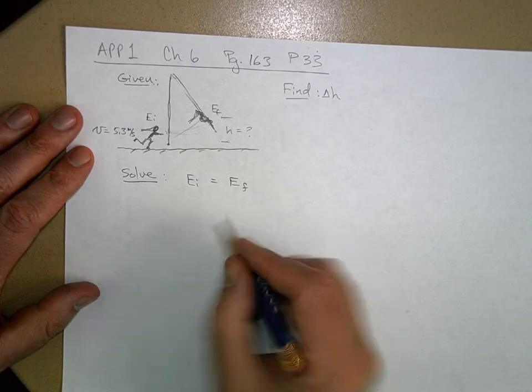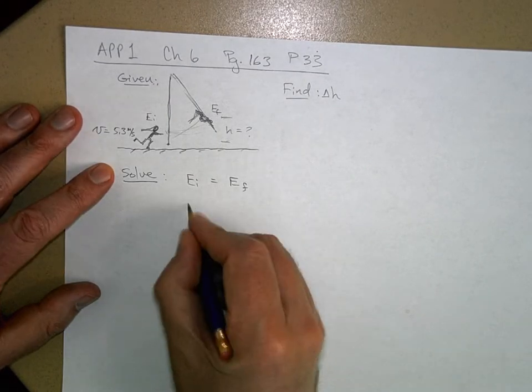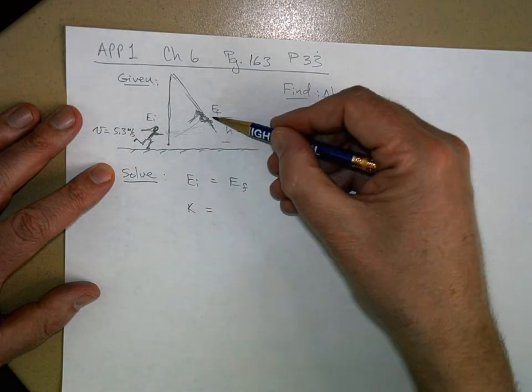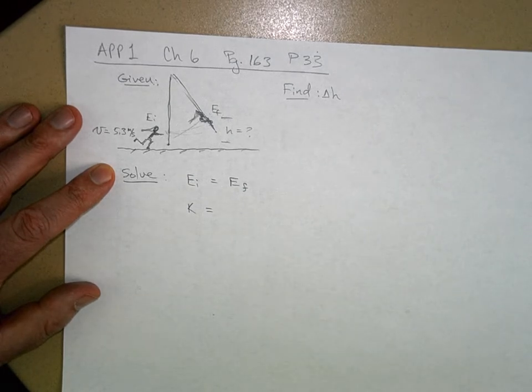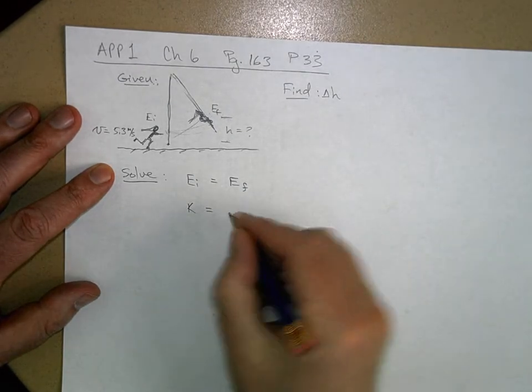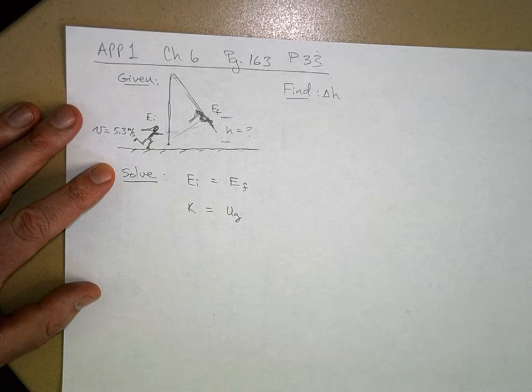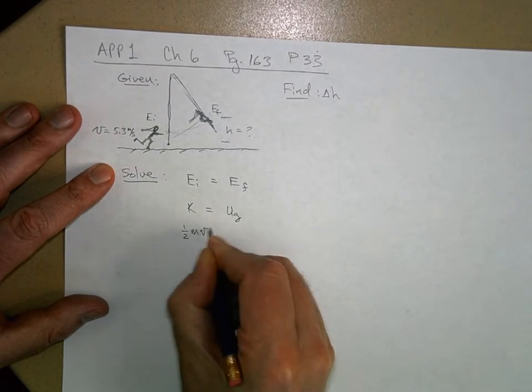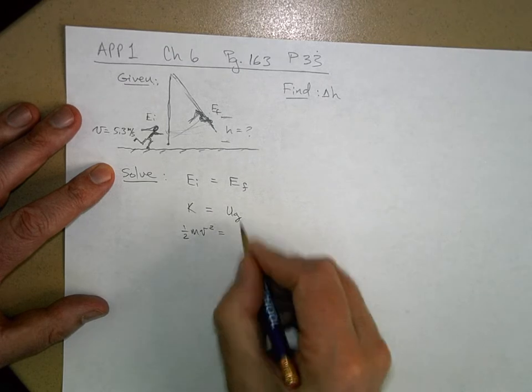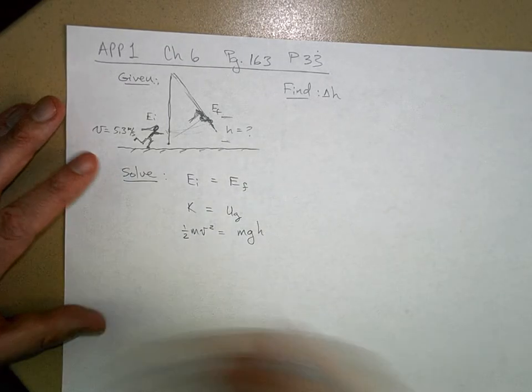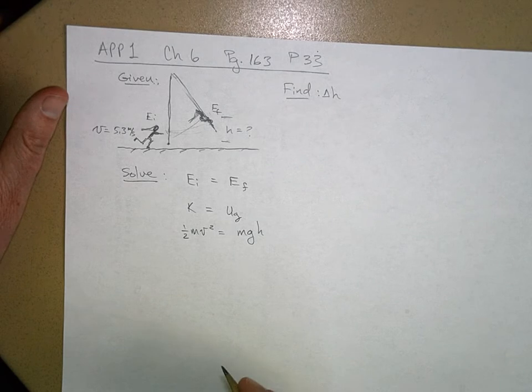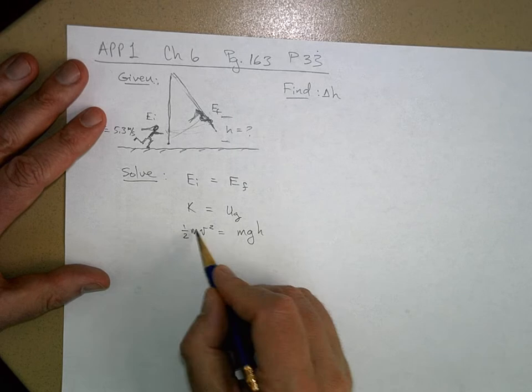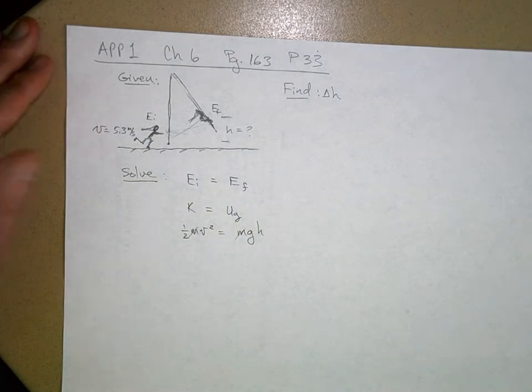And so now what is this? She has got kinetic energy here. What has she got up here? Well, she's reached her maximum height, so she's not moving anymore. So she doesn't have any kinetic energy, but she does have gravitational potential energy. And so now we can say, one half the mass times the velocity squared equals mgh, or height above.